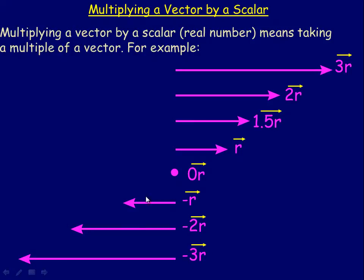Now, these vectors that go in the opposite direction — for example, negative 3r — we say that it's 3 times as long as r and in the opposite direction. You don't say it's negative 3 times as long. That's not the proper way to say it.